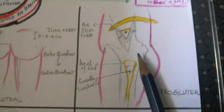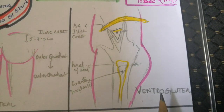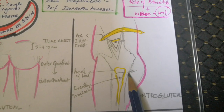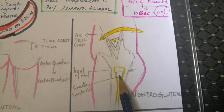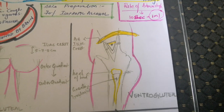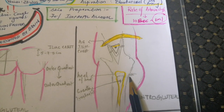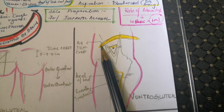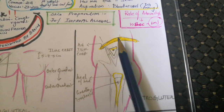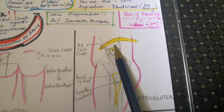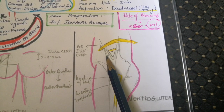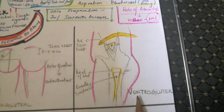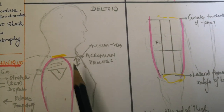For the ventrogluteal site: place the heel of the hand on the greater trochanter region. Then place the index finger towards the anterior superior iliac crest and the middle finger below the iliac crest, forming a triangle. The injection is given in between the knuckles of the two fingers — that is the anatomical location of the ventrogluteal site.